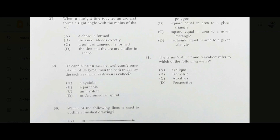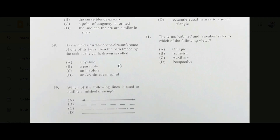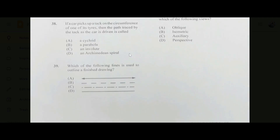Number thirty-eight: if a car picks up a tack on the circumference of one of its tires, the path traced by the tack as the car is driven is called a cycloid — answer A. Number thirty-nine: which line is used to outline a finished drawing? The answer is D, of course.